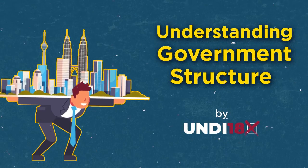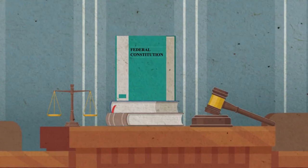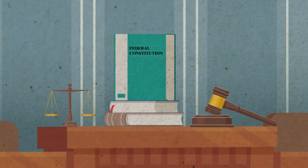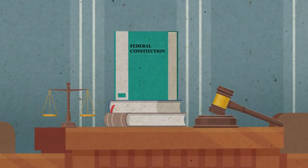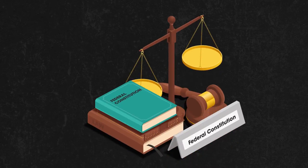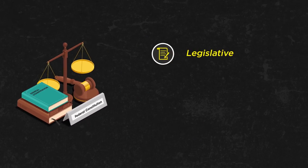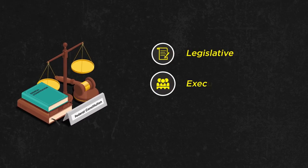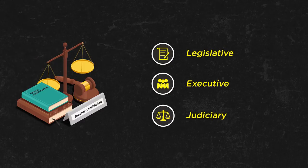As the supreme law of the land, the Federal Constitution essentially sets up the three main institutions needed to govern Malaysia, namely the Legislative, the Executive, and the Judiciary.